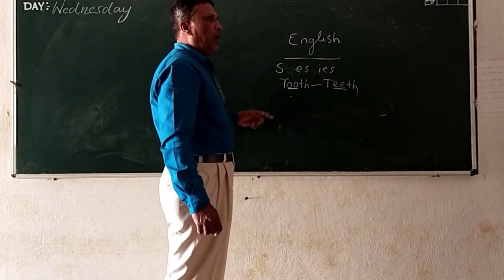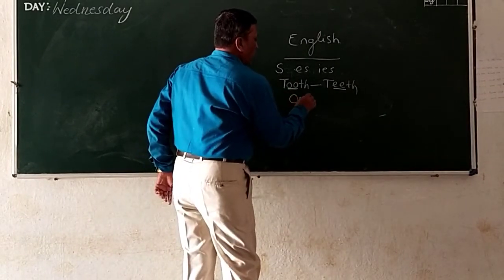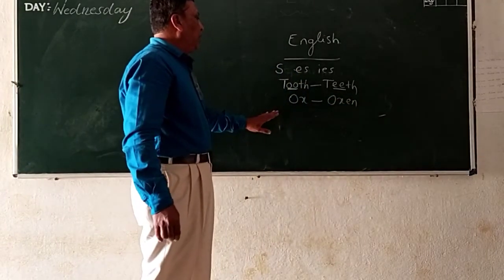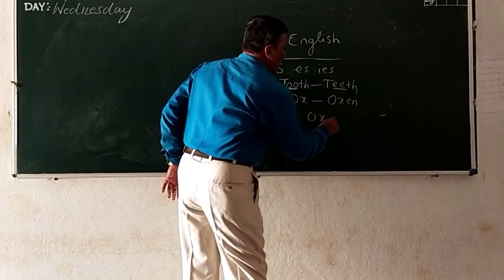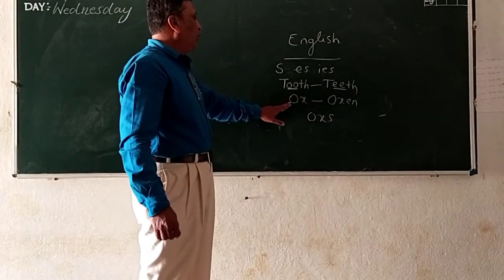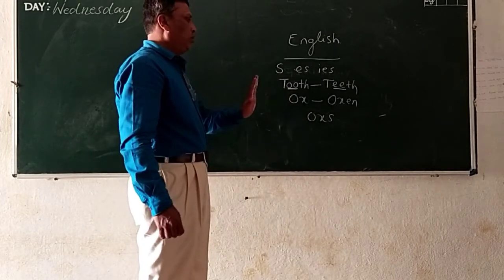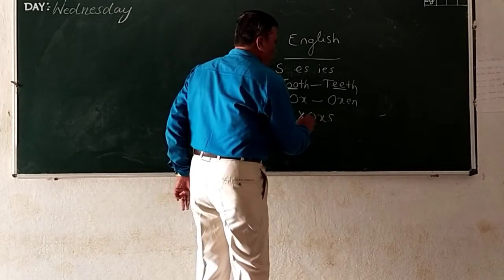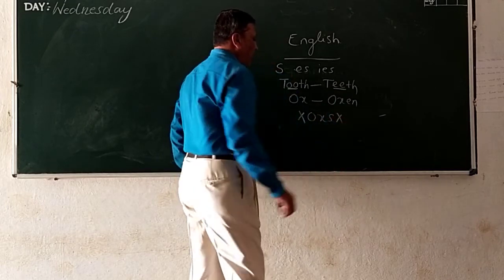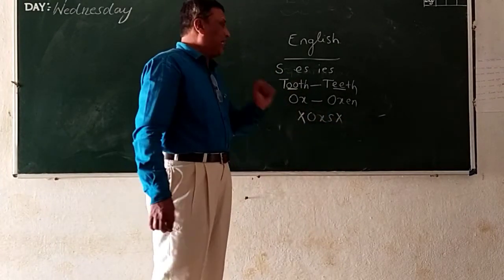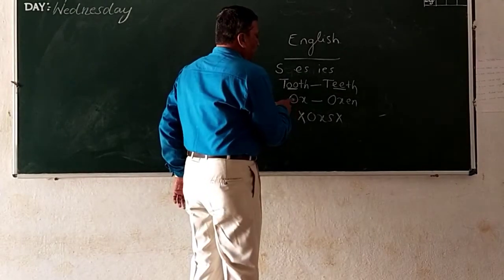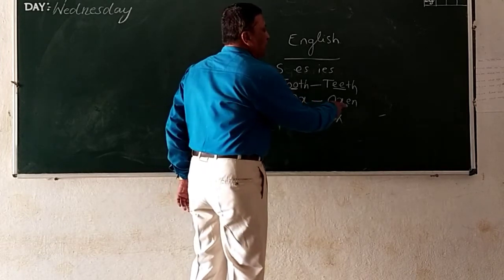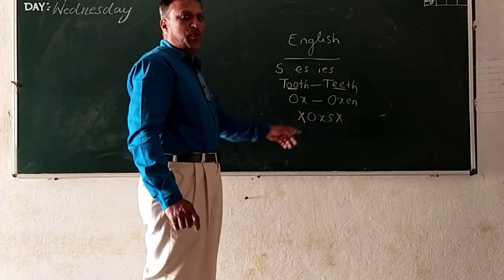Then I will give another example: ox. You sir, why it is not O-X-S? Sir, ox, I can't put it sir. No, we don't want to put S. Because if we put S, it's going to be wrong. Because if the last letter is X, we have to put E-N.